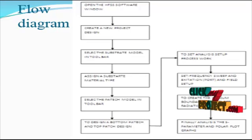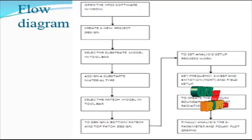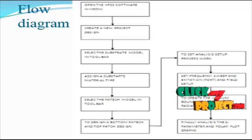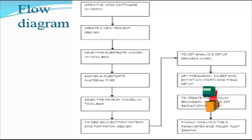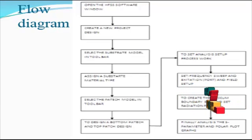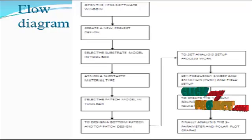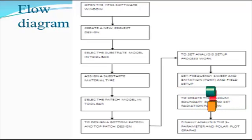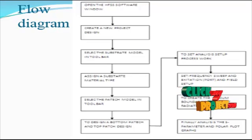Then we apply the substrate model to be implemented — for example, Rogers or Rogers 5400, 5003, or 5005. We then assign the substrate material type, where the material represents the Rogers material. We then go to the patch model design, using circular, square, or rectangular patch models, and use polylines for rectangular shape cuts and all related designs.